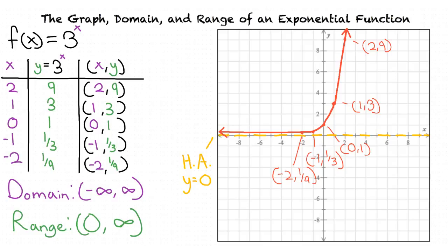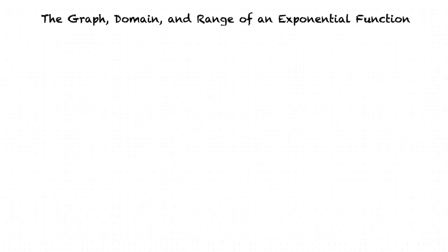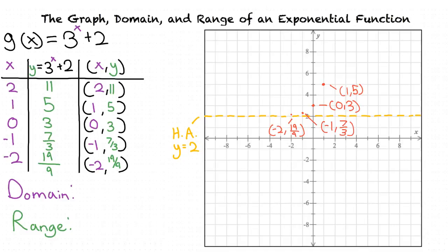We can now transform the graph to find the graph of our original function. Based on our rules of translations, our function has a vertical translation and it will move upward 2 units. This gives us the graph of the original function. Our points and the horizontal asymptote also move up 2 units, so the y values for our points move up 2 units while our horizontal asymptote is now y equals 2.